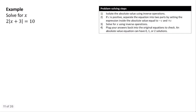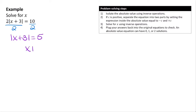In this next example, the absolute value is not isolated because it has a coefficient of 2 multiplying it. The inverse operation is to divide. Dividing both sides by 2 gives |x + 3| = 10 divided by 2 = 5. Since 5 is positive, we separate into two equations: x + 3 = 5 and x + 3 = negative 5.